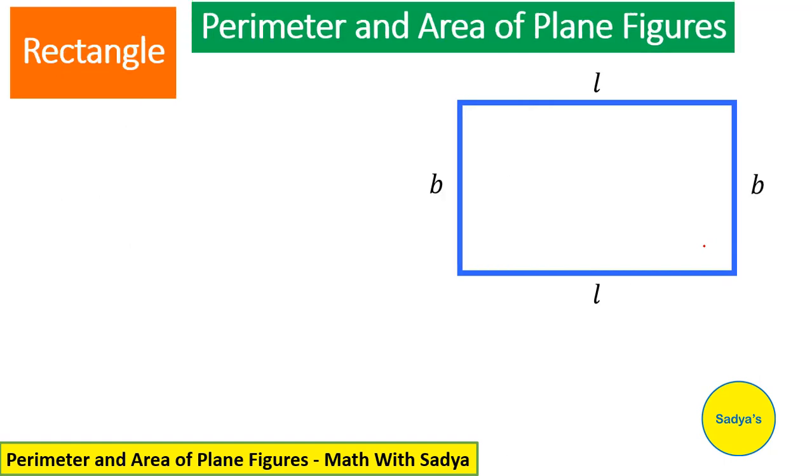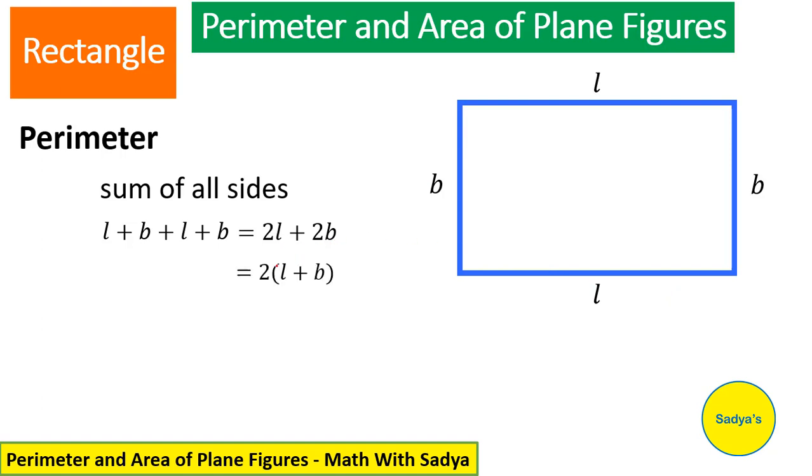The second shape is rectangle. We know that in rectangle, opposite sides are equal. Here length is L and breadth is B. So, perimeter of a rectangle is the sum of all sides which means L plus B plus L plus B. You can add the like terms, so it becomes 2L plus 2B and as 2 is common, you can also take 2 as common. You get 2 times length plus breadth. You may use any of these two forms.